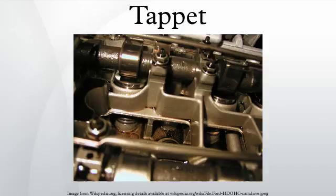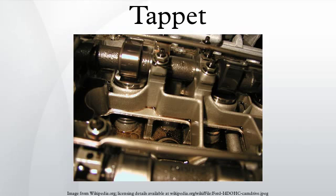The first Newcomen engines had manually worked valves, but within a few years, by 1715, this repetitive task had been automated. The beam of the engine had a vertical plug rod hung from it alongside the cylinder. Adjustable blocks or tappets were attached to this rod, and as the beam moved up and down, the tappets pressed against long levers or horns attached to the engine's valves, working the cycle of steam and injection water valves to operate the engine.